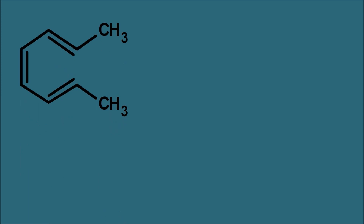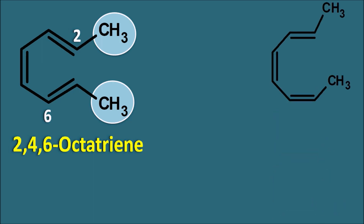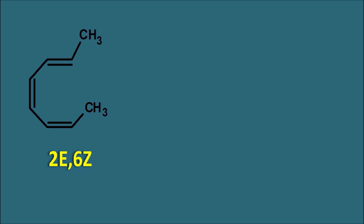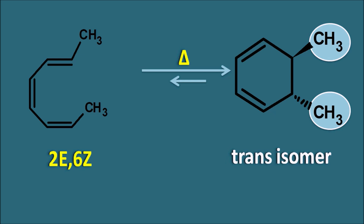Now let us take another example — a compound with three double bonds. This is the second carbon and this is the sixth carbon. Focusing on the methyl groups at the first and last double bonds, one configuration is 2E6Z (opposite at the second position, same at the sixth position) and another is 2E6E (methyl groups opposite at both the second and sixth positions). Taking the 2E6Z isomer and supplying thermal energy gives a product where the methyl groups are in opposite configuration — this is the trans isomer. So 2E6Z on thermal source gives the trans isomer, which is quite opposite to the previous example with two double bonds.